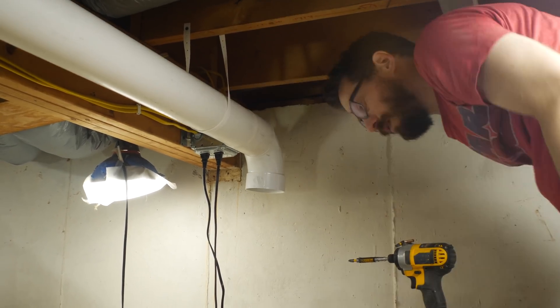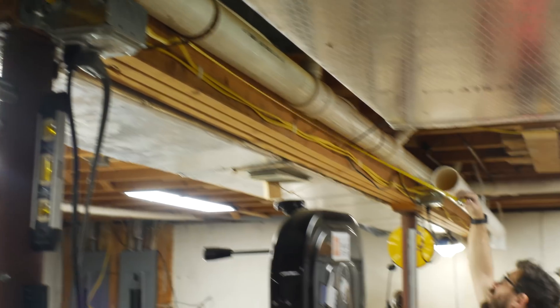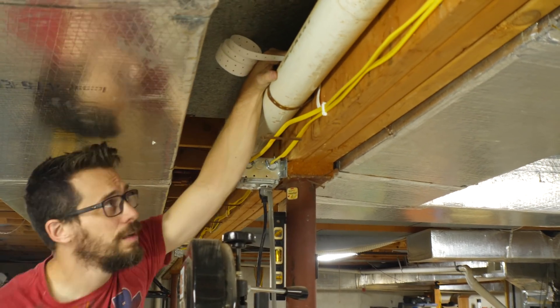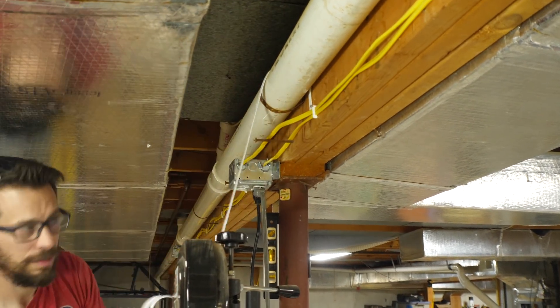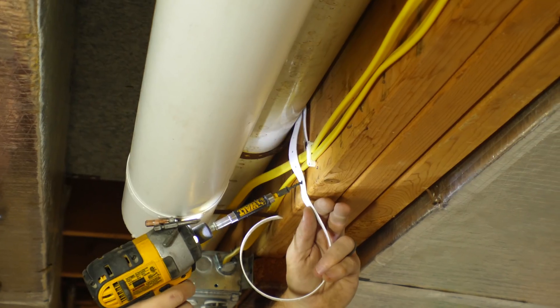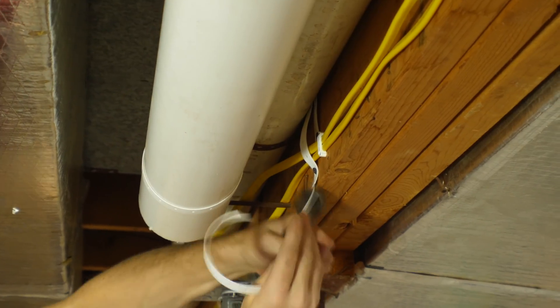When you're making a dust collection system like this, you don't want any sharp corners within the pipes. It cuts down the speed of the air and makes it less efficient. I used a sweeping 90 degree elbow so that it makes that turn over a longer distance. Another option is to get two 45 degree angle pieces, and then add a straight section in between them.